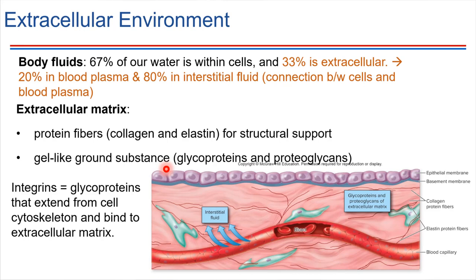The ground substance consists in large part of glycoproteins and also proteoglycans. Both of these are protein molecules that have modifications — glycoproteins have a carbohydrate group attached to the protein. What these do in large part is they are molecules that are attractive to water; water tends to stick nearby these substances, which helps to maintain the more fluid environment of the extracellular matrix. There are also proteins called integrins, which connect the cell cytoskeleton inside the cell to the extracellular matrix, helping to anchor cells in place and provide a physical connection from the inside to the outside of the cell.